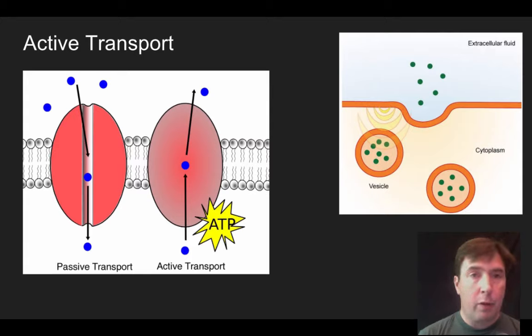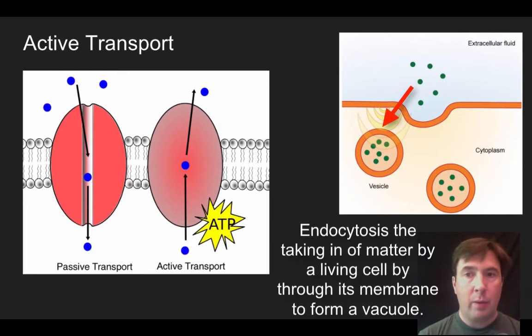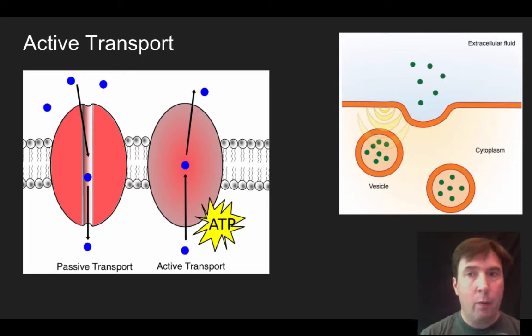Another type of active transport could be endocytosis or exocytosis. So in endocytosis, what we would have is we'd have materials outside the cell that would get pulled in through the pinching off of the membrane, forming a little vesicle, and that would be engulfing or endocytosis. Amoeba actually eat in a form of this known as phagocytosis, where they send out pseudopods and engulf their food.